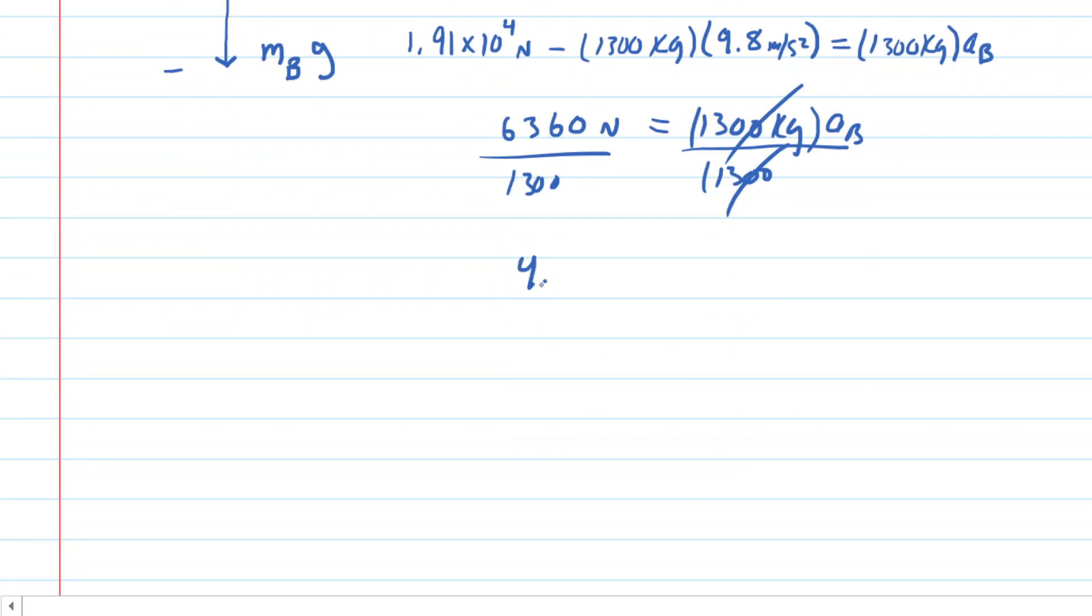And on the left hand side we're going to get about 4.89 meters per second squared. This is the acceleration on cab B. It came out positive so that means this cab and every other object in the system is accelerating upward.